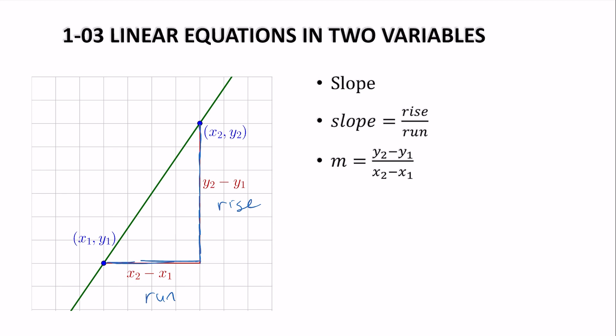So our slope is y2 minus y1 over x2 minus x1. If our slope is positive, the line rises from left to right. If the slope is 0, it is horizontal. If the slope is negative, it falls from left to right. And if the slope is undefined, as in we're dividing by 0, it is vertical.